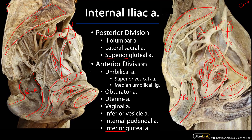The next set of arteries are really named for their targets, and what's sometimes challenging is that many of these arteries will have branches that also supply adjacent viscera. Here we see a common trunk branching into the uterine artery and a vaginal artery. The uterine artery, at about the level of the internal os of the uterus, is going to cross over the ureter. That relationship is immortalized in the mnemonic 'water under the bridge,' with the uterine artery as the bridge and the ureter as the water.